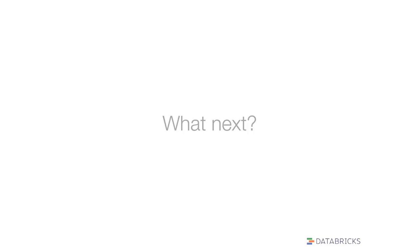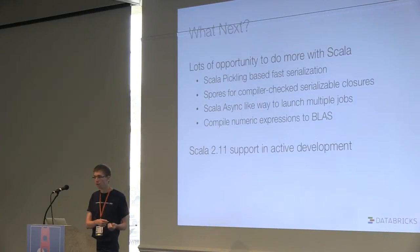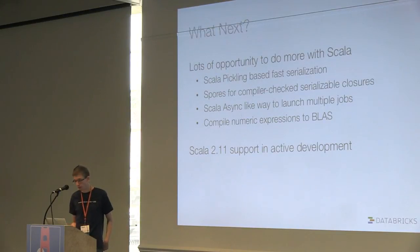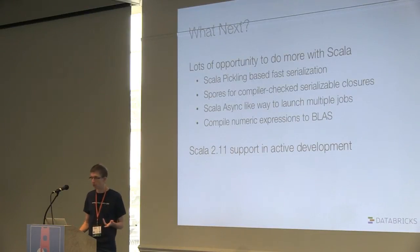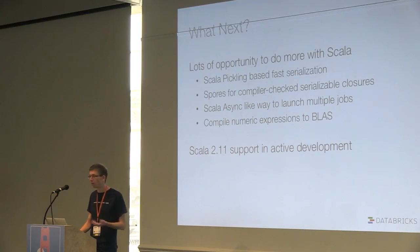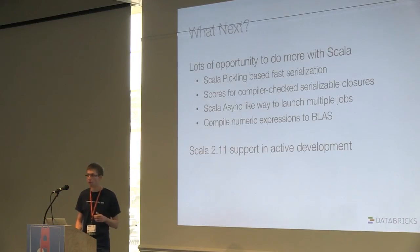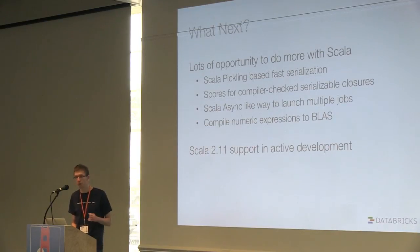That's kind of what I wanted to talk about — hopefully it's given you a sense of some cool things you can do in both user-facing APIs and internally. Just a few slides on what's next. We think there's lots of opportunity to do more with Scala in the Scala API. Some examples: the Scala team is spending time on serialization, making it efficient to serialize objects and send them over the network, making it type-safe to have functions you can safely send to another machine. Scala async is a cool way to launch asynchronous jobs to let you run multiple jobs at the same time. And for math stuff, compiling numeric expressions to fast C code is an interesting thing we'd like to do. Scala 2.11 is not yet supported in Spark but getting very close and actively in development.